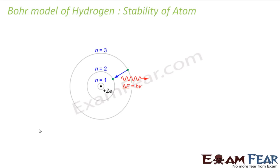For the stability of the atom, Bohr gave an explanation that in a particular orbit, energy is constant. If you take an electron anywhere in this orbit, it will have the same energy. Since he says the electron is moving in the same orbit, it is not losing energy.